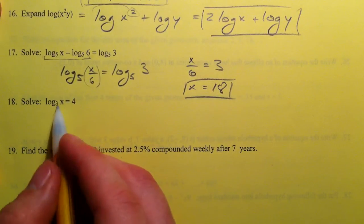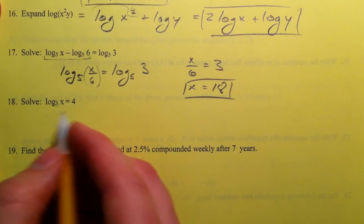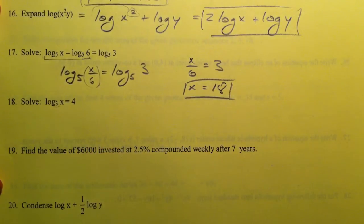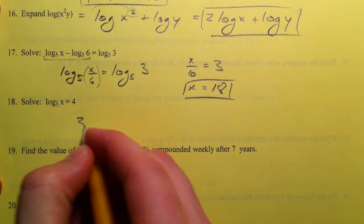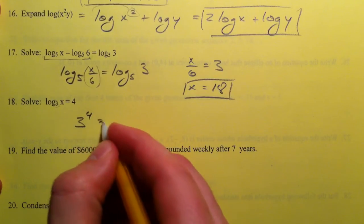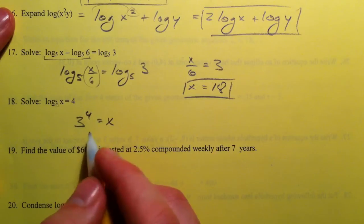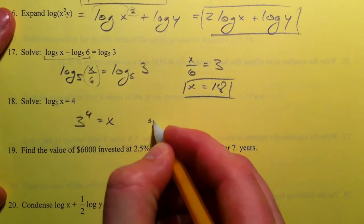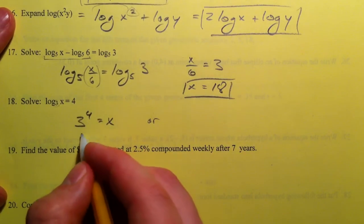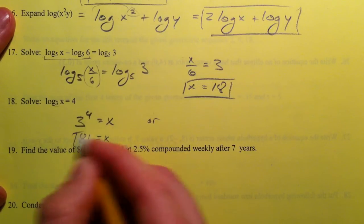To solve this logarithmic, we've got a base, and let's change it to exponential. We say 3^4 equals x. And that's changing it to exponential form. Or you could think, and 3^4 is 81. And so x is 81.